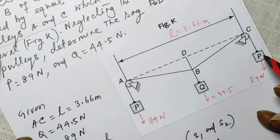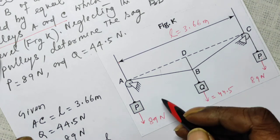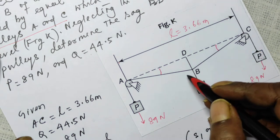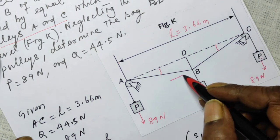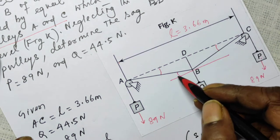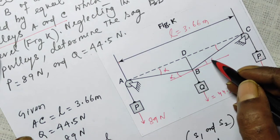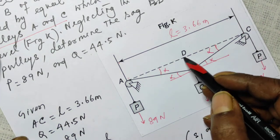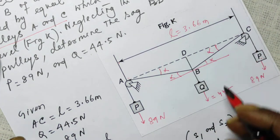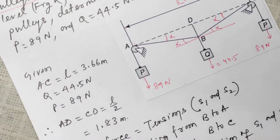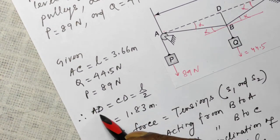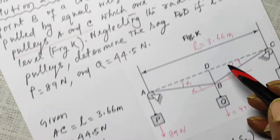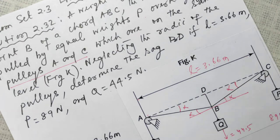Since the weights are equal, the configuration will be symmetrical. This angle will be equal to that angle. If you draw a horizontal line, this angle is alpha, and all corresponding angles are also alpha. From A to D and from D to C will be equal, so AD = CD = l/2 = 1.83 meters, which is half of 3.66 meters.